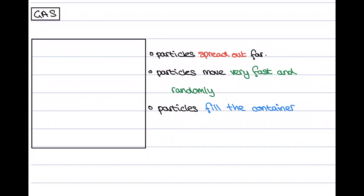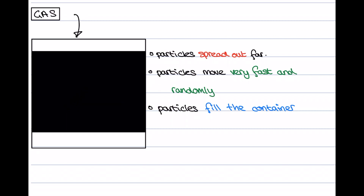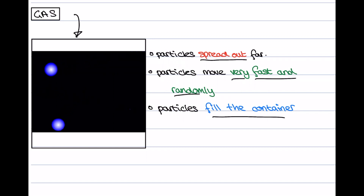For the particles in a gas, you'll notice they're very different to the liquid and solid. The main reason is that they are spread out very, very far, so the particles in a gas do not touch their neighbours. Because of this, we have room to push these particles towards one another when we compress the gas. The particles in a gas fill up the container that they're in, and they also move very, very fast and randomly. The reason for this is that the particles in a gas hold the most amount of energy, while particles in a solid have the least amount.